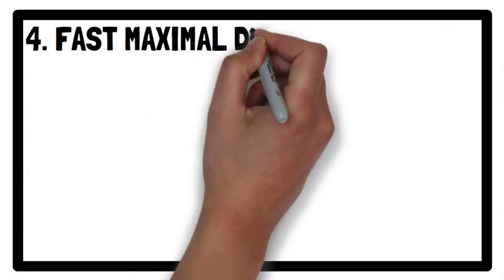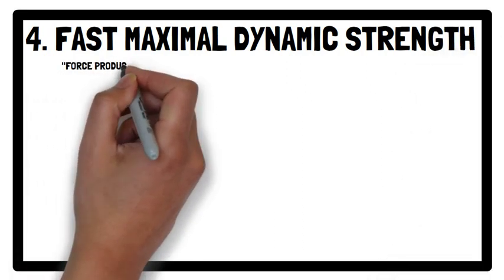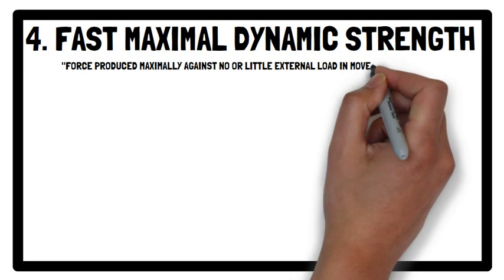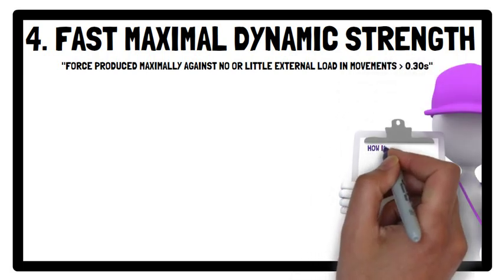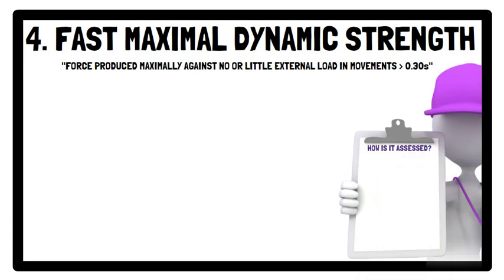Moving on to the fourth strength quality: fast maximal dynamic strength. This is the force produced maximally against no or little external load in movements above 0.30 seconds. Common assessments include the counter movement jump or squat jump. A measure of jump height can be obtained with only chalk on the wall or a jump-and-reach device, which can be an acceptable measure. However, performing these jumps using force platforms, accelerometers, or linear position transducers provides greater insight into an individual's high-velocity maximal dynamic strength.